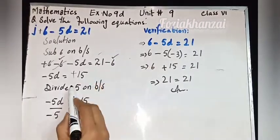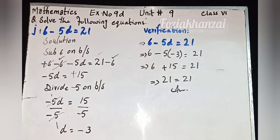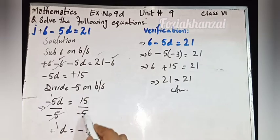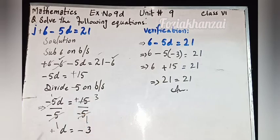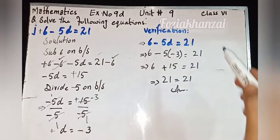Apply division property — divide minus 5 on both sides. Minus 5d upon minus 5 is equal to 15 upon minus 5. 5 ones are 5 — cancel and reduce. Minus times minus is plus, so d is positive. 5 threes are 15, so d is equal to minus 3.